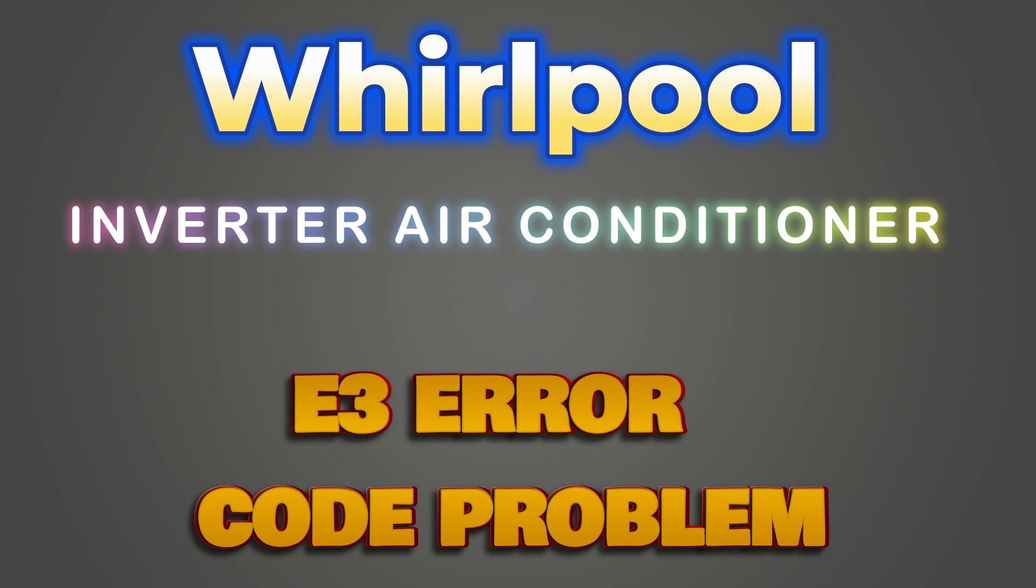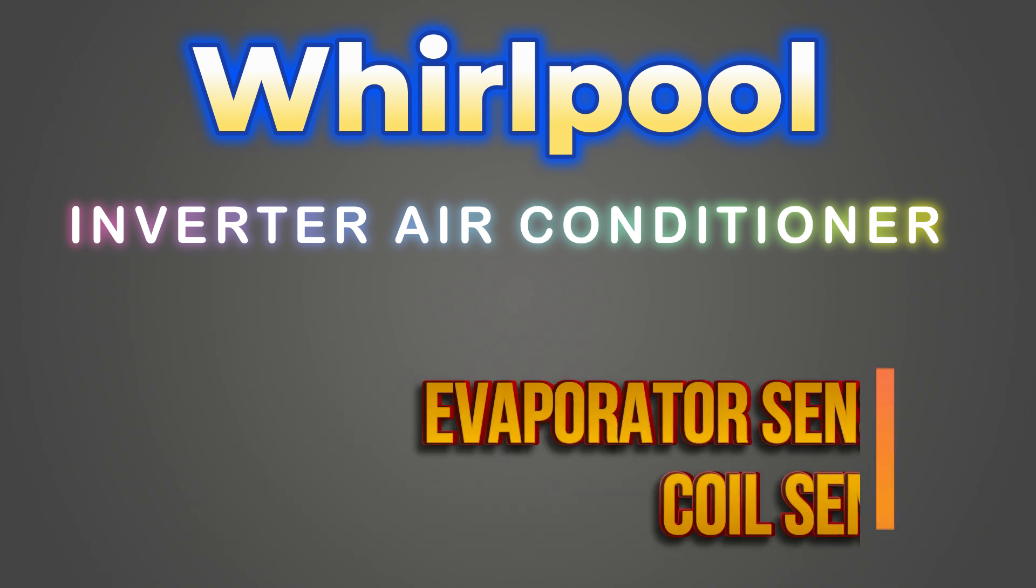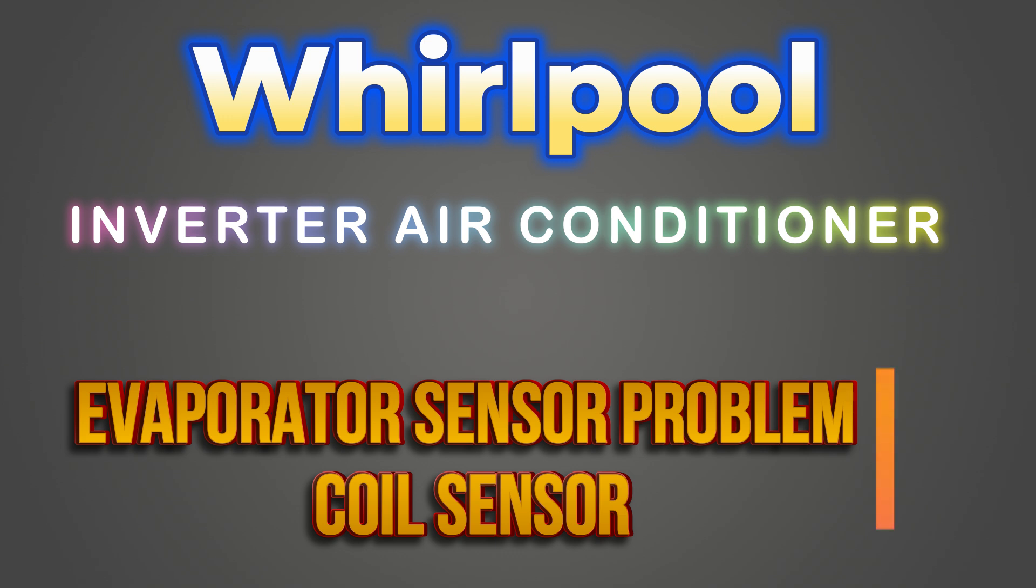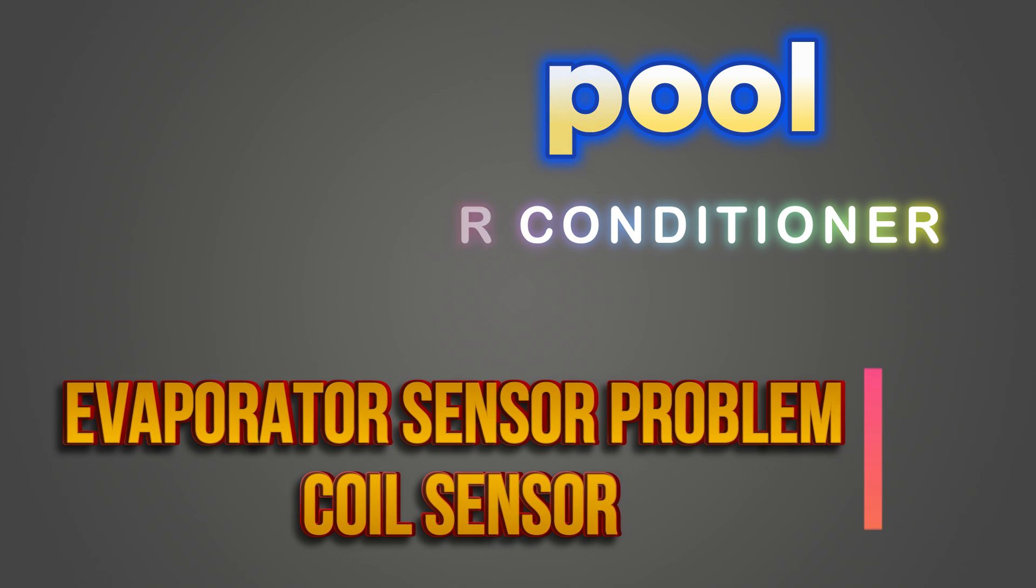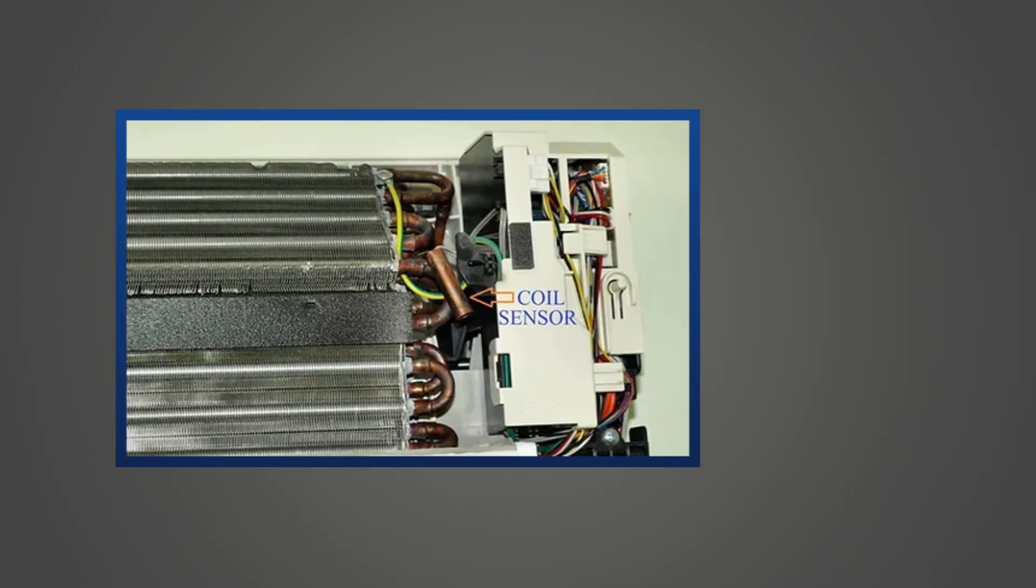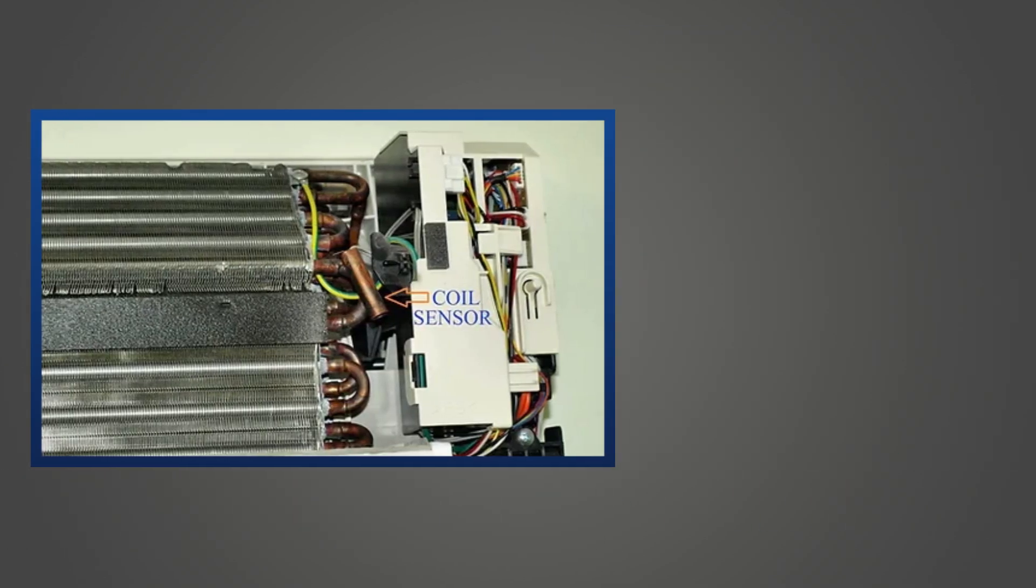If E3 is coming in Whirlpool AC, then this is an error of evaporator sensor. In simple words it can be called coil sensor. This sensor is installed in the coil of the indoor unit.